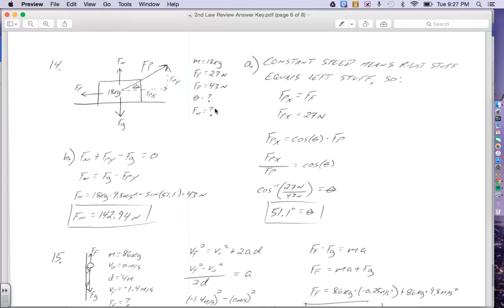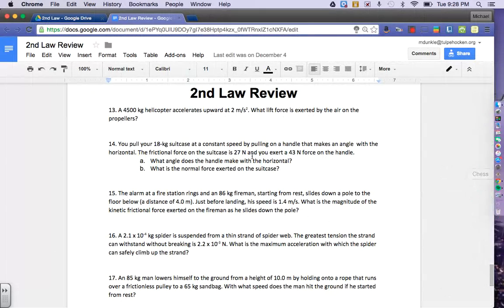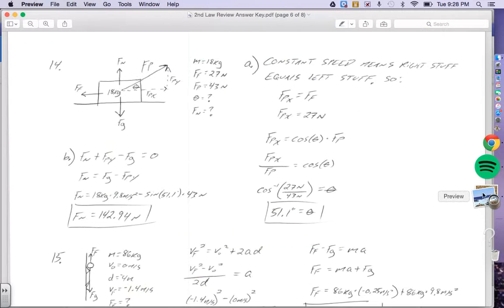So first, with part A, we're going to be trying to find what the angle is. Something that you might have missed is that you pull your 18-kilogram suitcase at a constant speed. Constant speed means there's no acceleration, and no acceleration means that A is zero. And that goes back to equilibrium, where all the right stuff equals all the left stuff.